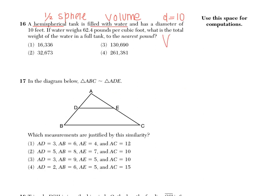First we need to calculate the volume of this hemispherical tank. If you look at your reference sheet, the volume of a sphere is 4/3 π r cubed. But because we're talking about half of a sphere, a hemisphere, we need to divide that all by 2. We're given the diameter, but we need the radius — the radius is half the diameter, so in this case the radius is 5. So plugging in, we have 4/3 π times 5 cubed, all over 2.